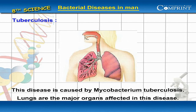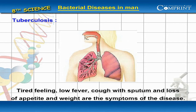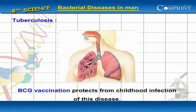Tuberculosis. Lungs are the major organs affected in this disease. Tired feeling, low fever, cough with sputum and loss of appetite and weight are the symptoms of the disease. BCG vaccination protects from childhood infections of this disease.